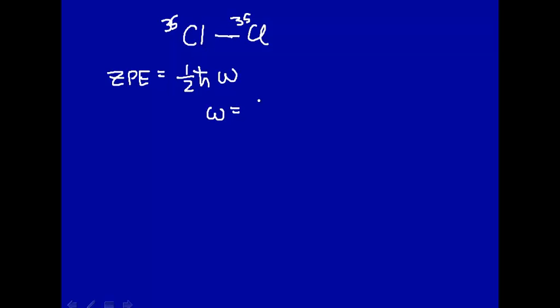Now remember, omega—that's the vibrational frequency in radians per second—is equal to the square root of k over, now here we're going to use reduced mass μ, because we have two atoms, a diatomic molecule vibrating, and one end of the molecule is not fixed in space. So we have to use the reduced mass.